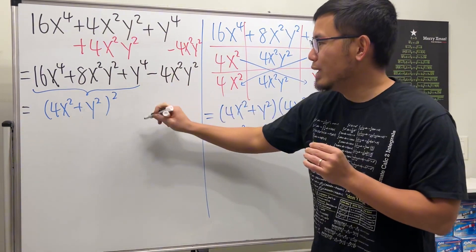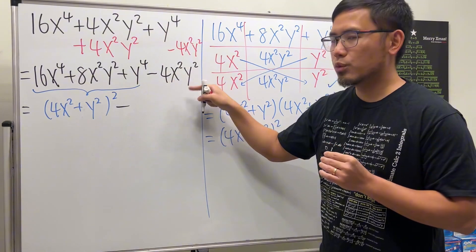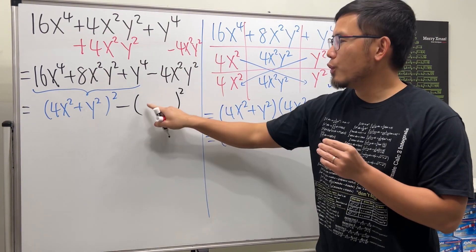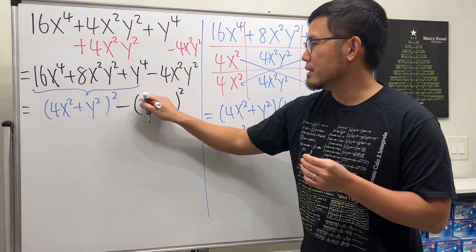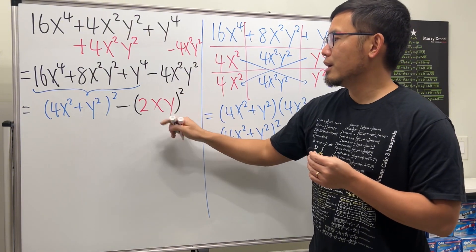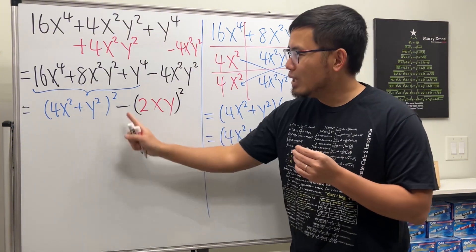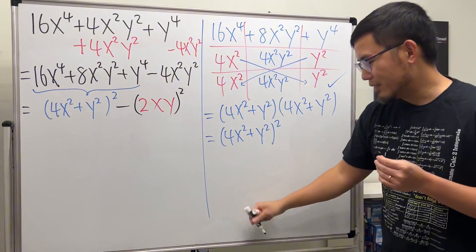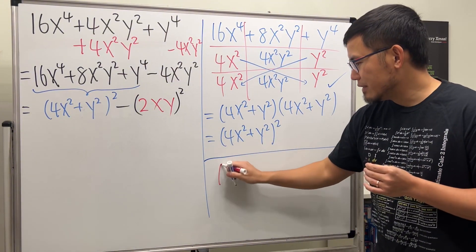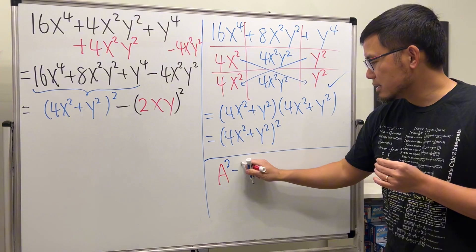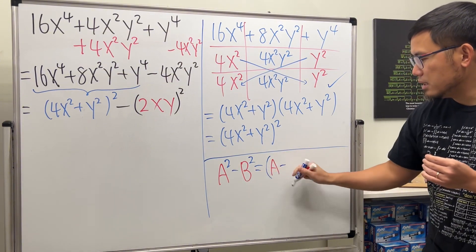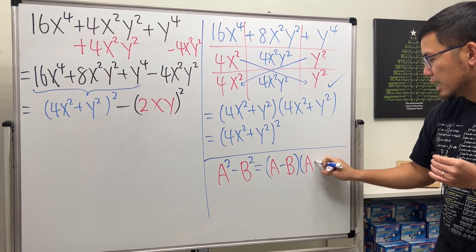Now we have minus 4x²y² remaining, which we can also write as a perfect square. What squared gives us 4? That's 2. What squared gives us x squared? Just x. What squared gives us y squared? Just y. So that term is (2xy) squared. Now we have a difference of two squares: (4x² + y²)² minus (2xy)². Recall the formula: a² minus b² factors as (a − b)(a + b).